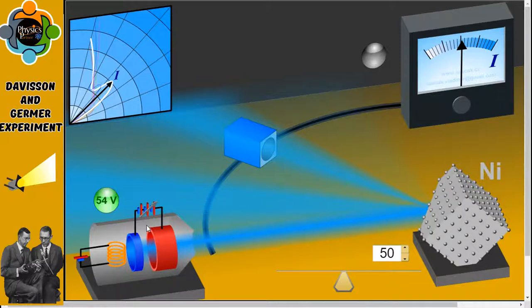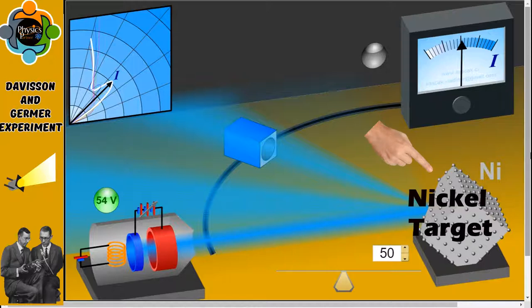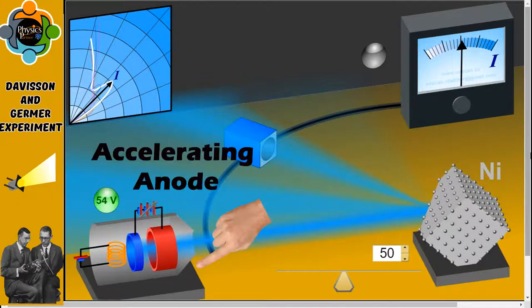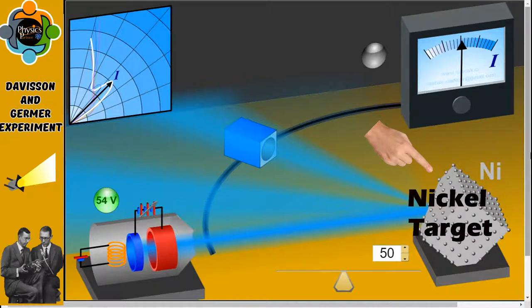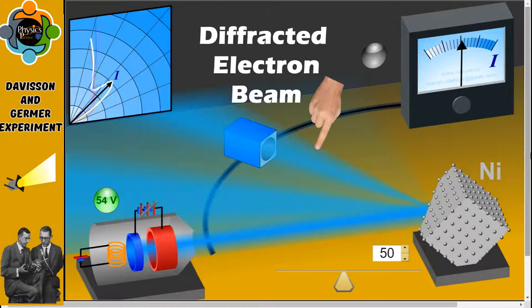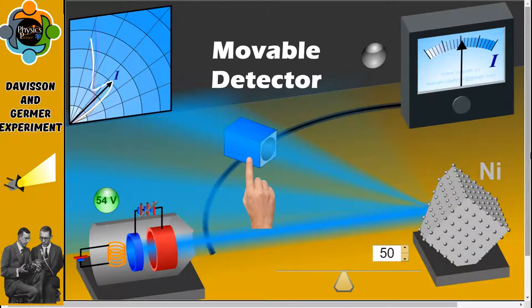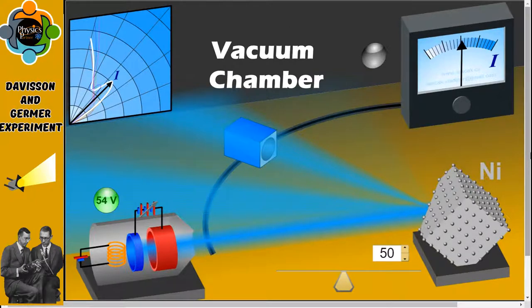The Davisson-Germer experiment was originally designed to study the surface of nickel rather than confirm the de Broglie hypothesis. The apparatus you can see here is the experimental setup. You can see the nickel target on that side and an accelerating anode from where the electron beam strikes the nickel target. The diffracted electron beam goes to a movable detector, and this is all placed in a vacuum chamber. There is also a heated filament used to produce the electron beam.